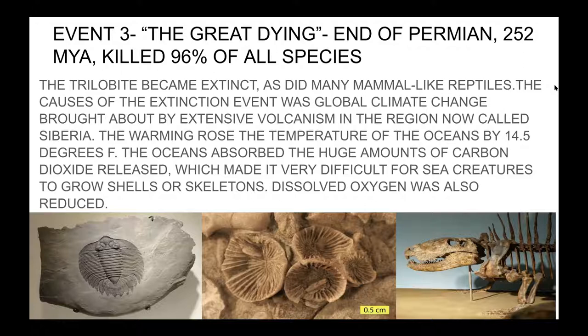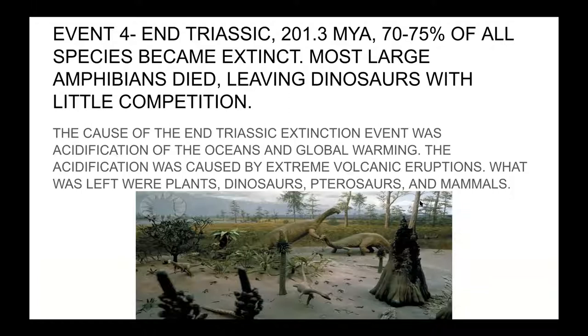Three organisms that went extinct in the Great Dying: the trilobite, the rugosa horn coral, and the dimetrodon — who was more closely related to mammals than reptiles, even though he looks like one. He predated the reptiles by about 60 million years. Event number four was the end-Triassic event, 201.3 million years ago. 70 to 75 percent of species became extinct. Most large amphibians died, which left the environment open for dinosaurs and mammals with very little competition. The cause was acidification of the oceans and global warming, leaving mostly plants, dinosaurs, pterosaurs, and mammals.